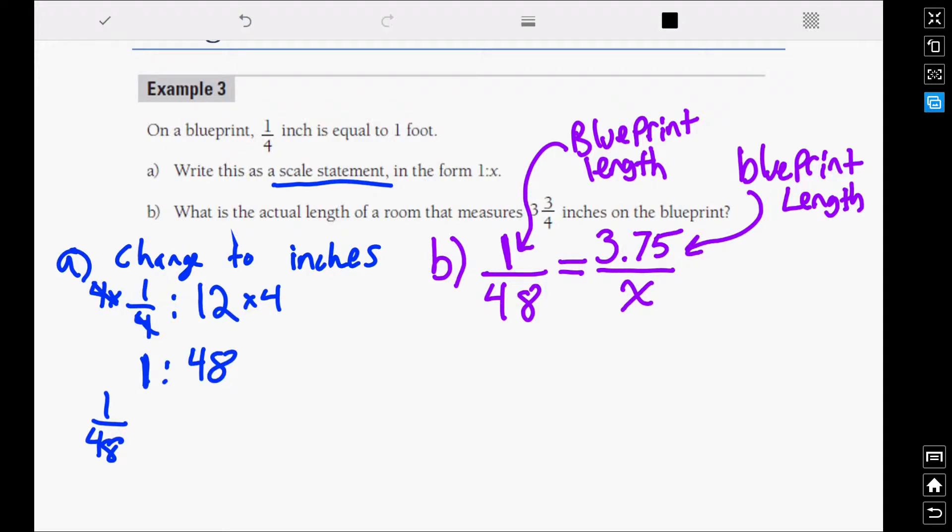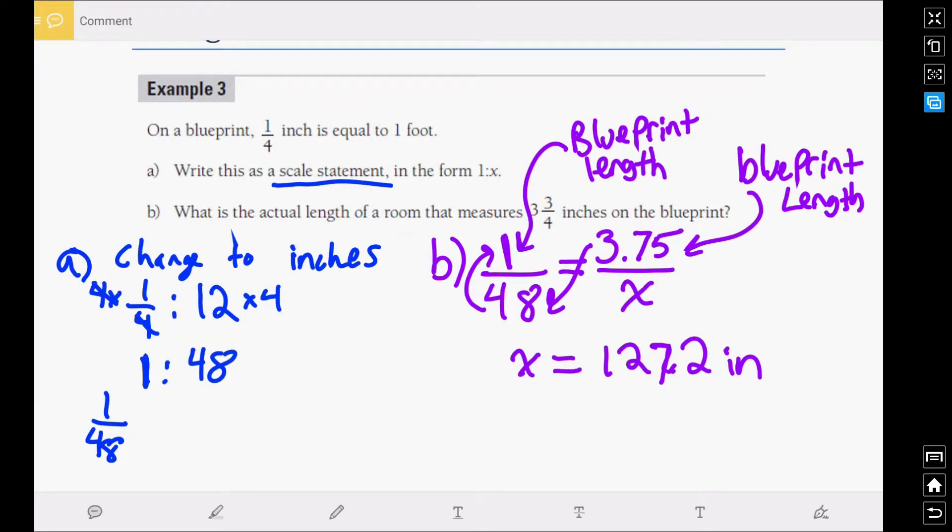So with that written out, now it just becomes an issue of cross-multiplying and dividing. And that will give us an answer of x equals 3.75 times 48, which gives us an answer of 127.2 inches. So that is the actual length. 127.2 inches is the length of the actual room. And all we had to do was use our scale statement, set it up as a proportionality, and then just cross-multiply and divide. Let's move on to the next example.